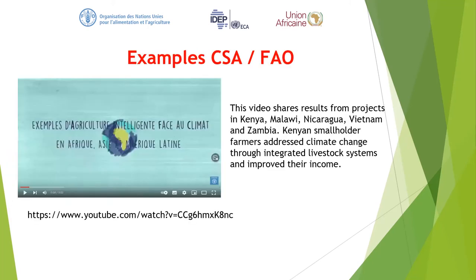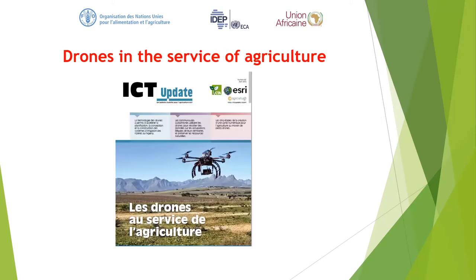Another example is a video — the URL link is provided — and I encourage you to go and watch it. This video shares results from projects in Kenya, Nigeria, and about five other countries. It shows Kenyan smallholder farmers how they address climate change through integrated livestock systems and improved income. A lot of these countries are developing countries, so many of us can relate. Please take time to watch and find out more.